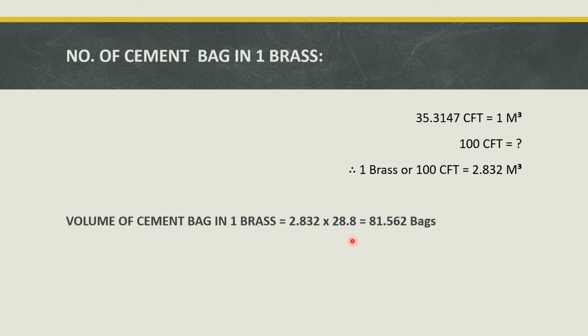If one cubic meter volume contains 28.80 number of bags, then 2.832 cubic meters, which is equal to one brass of volume, contains 81.562 number of bags. Therefore, one brass equals 81.562 number of cement bags.